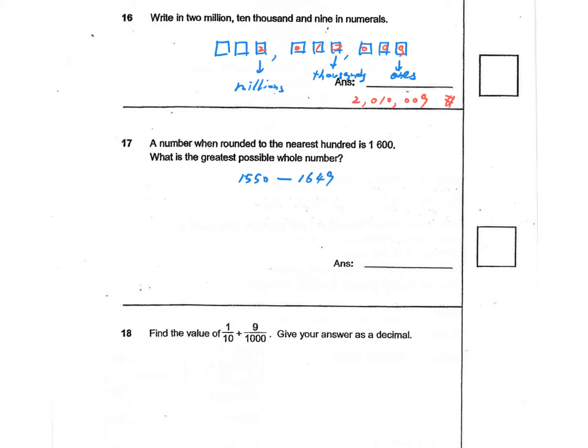We want to make sure that it's less than 50. So among this range, the greatest possible whole number is going to be 1,649. This is our answer.